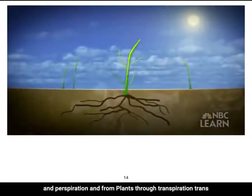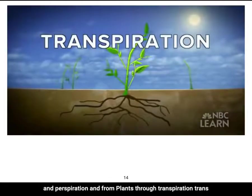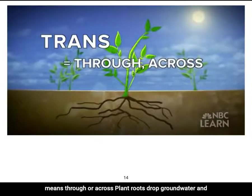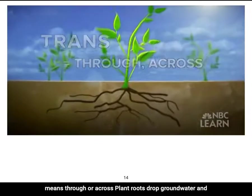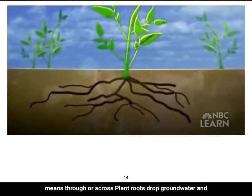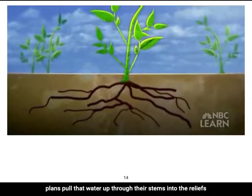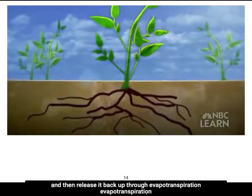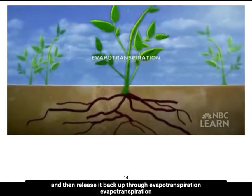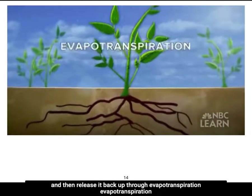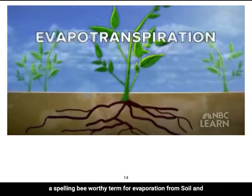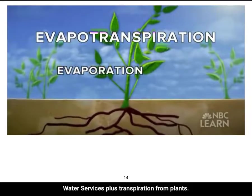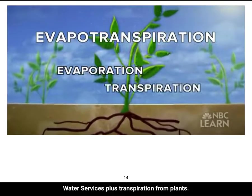From plants, water is released through transpiration. Plant roots draw groundwater, and plants pull that water up through their stems into their leaves and then release it back out through evapotranspiration — a spelling-bee-worthy term for evaporation from soil and water surfaces plus transpiration from plants.